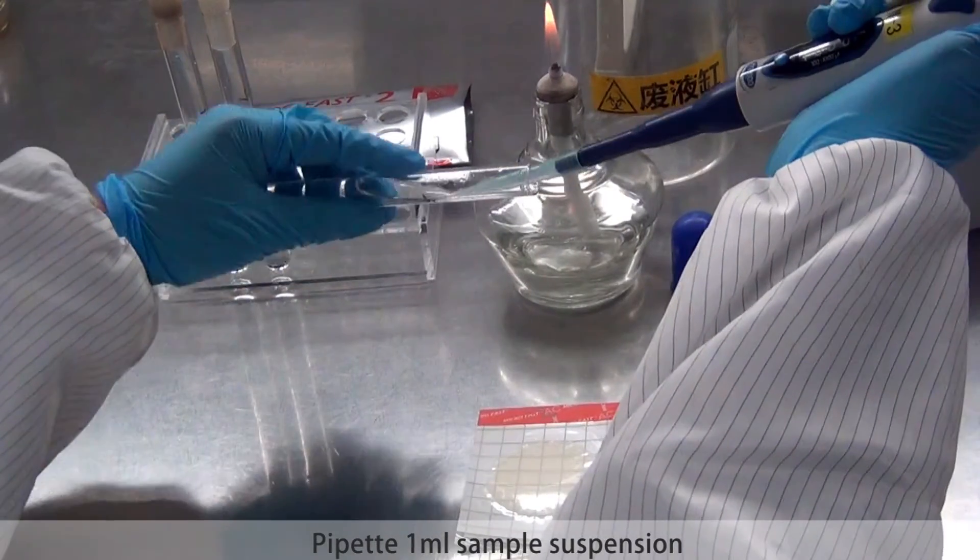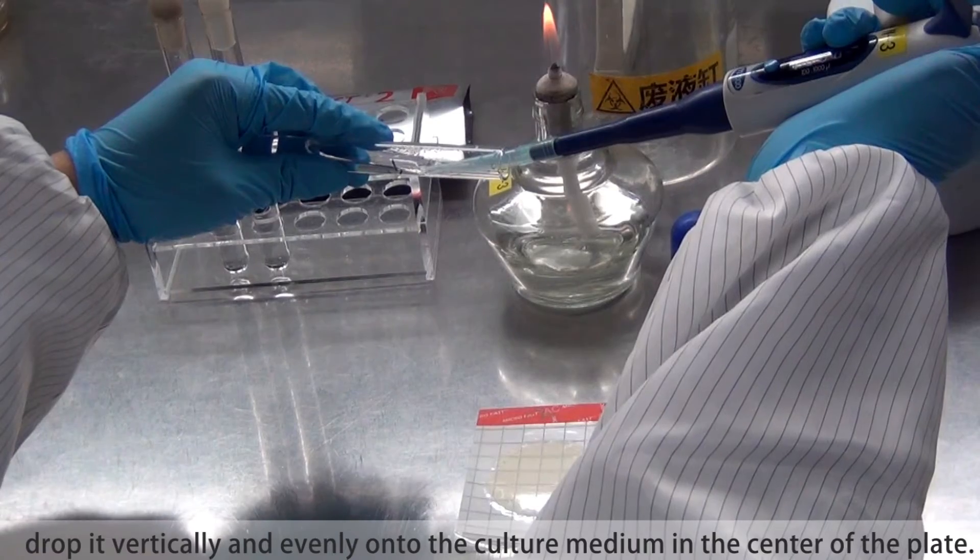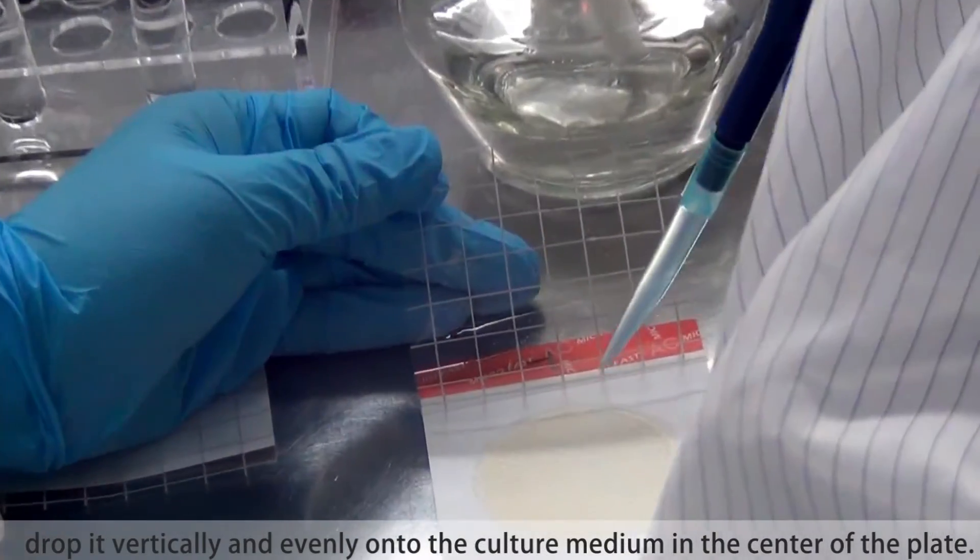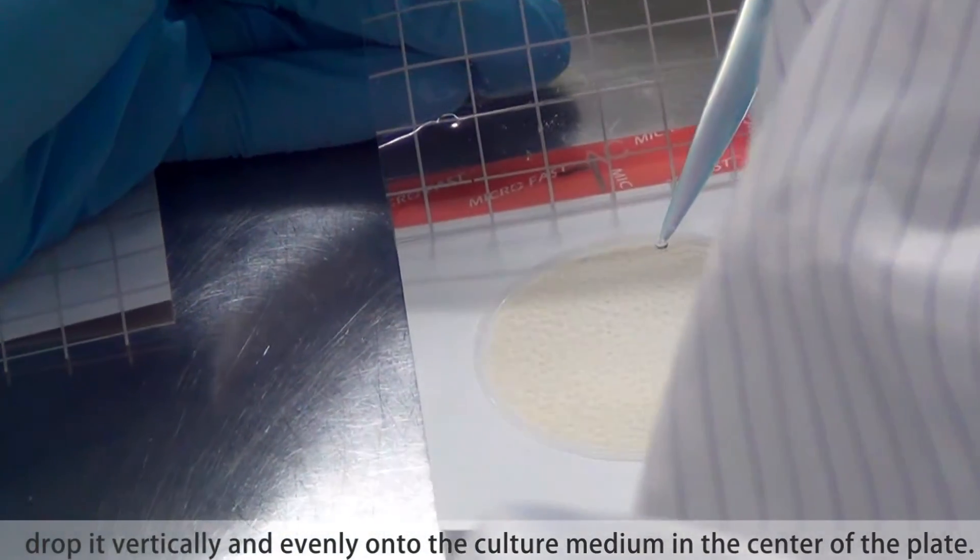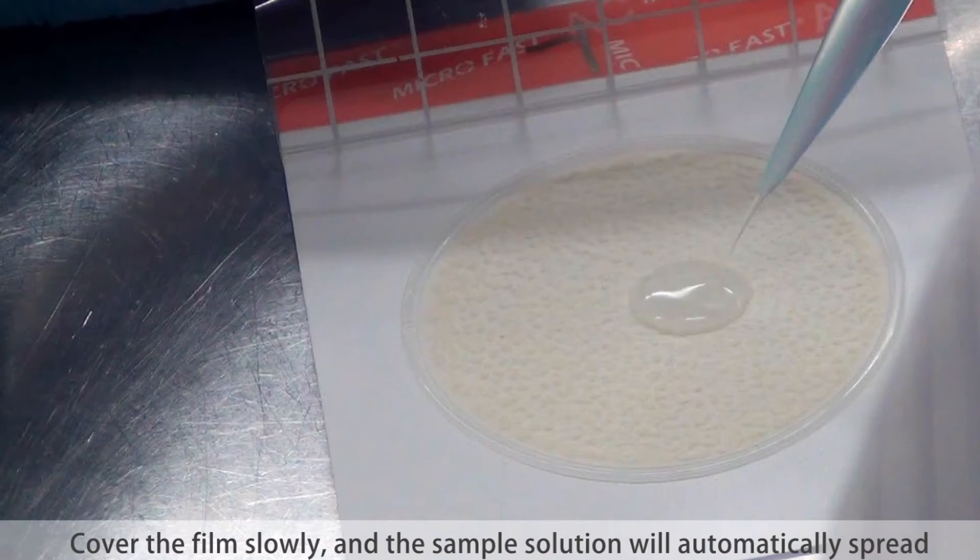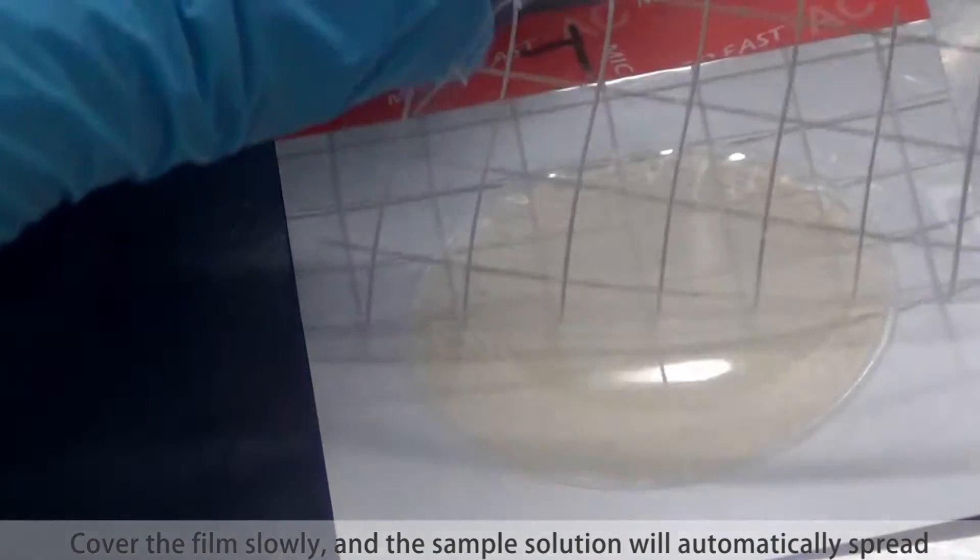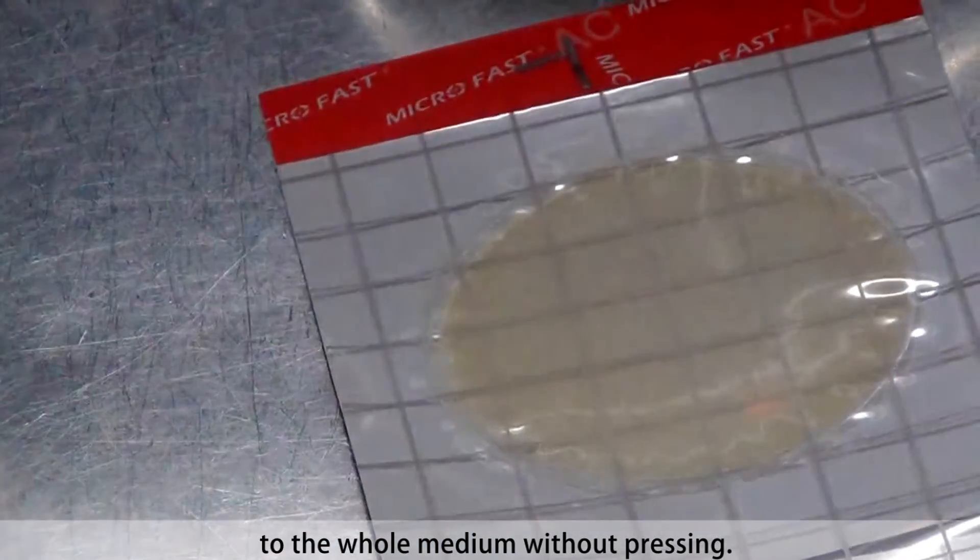Pipette 1 ml sample suspension. Drop it vertically onto the culture medium in the center of the plate. Cover the film slowly and the sample solution will automatically spread to the whole medium without pressing.